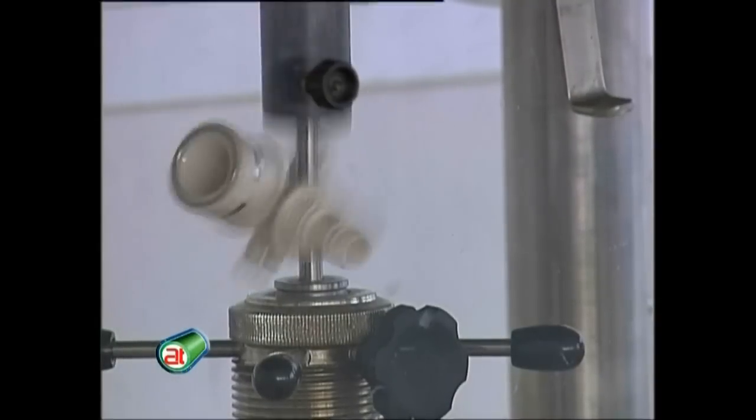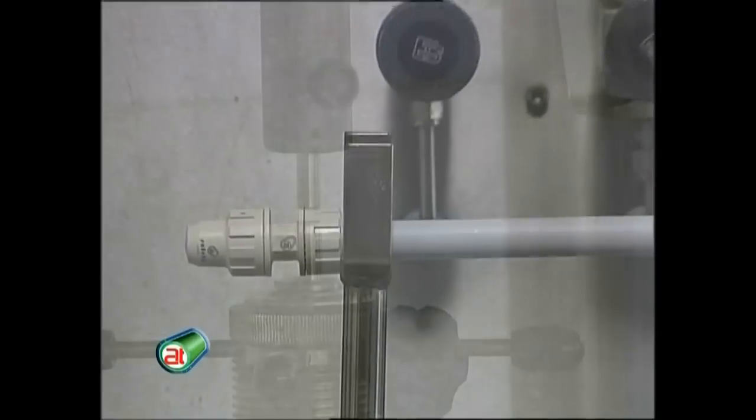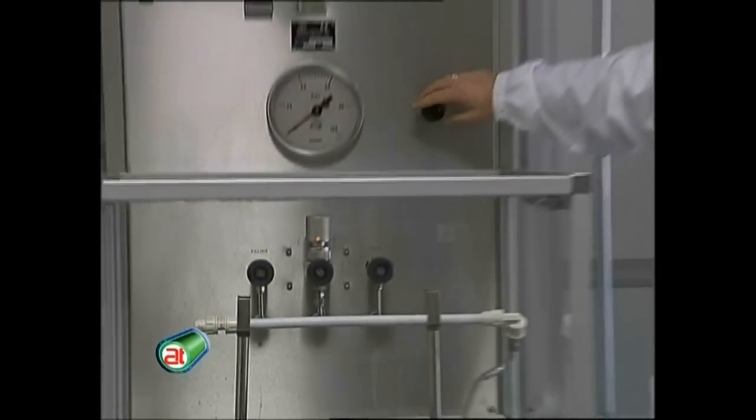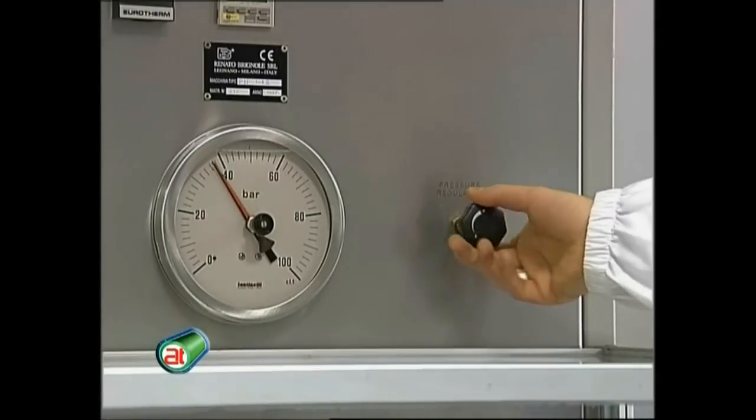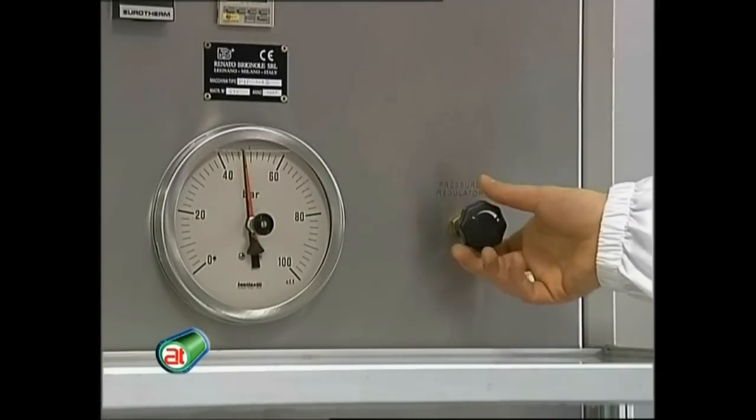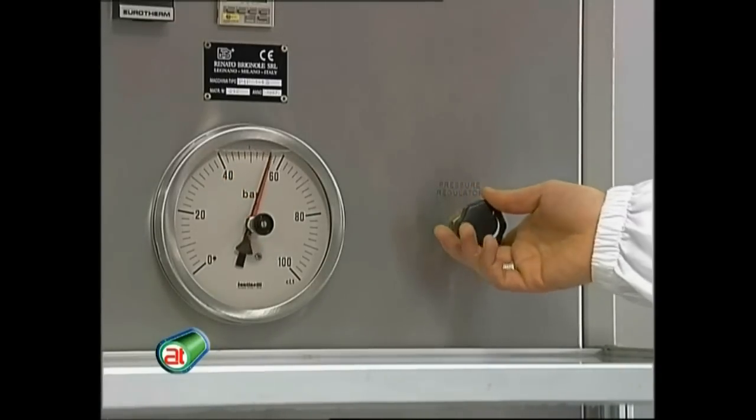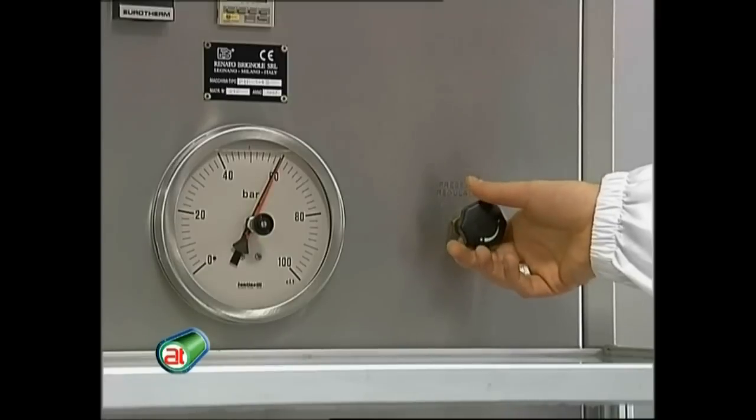The burst testing, one of the most interesting and astonishing tests, shows the pipe-to-fitting junction tightness even at high pressures, ranging between 90 and 100 bar. Under such conditions, a structural failure of the pipe will actually occur, while the junction seal is still working.